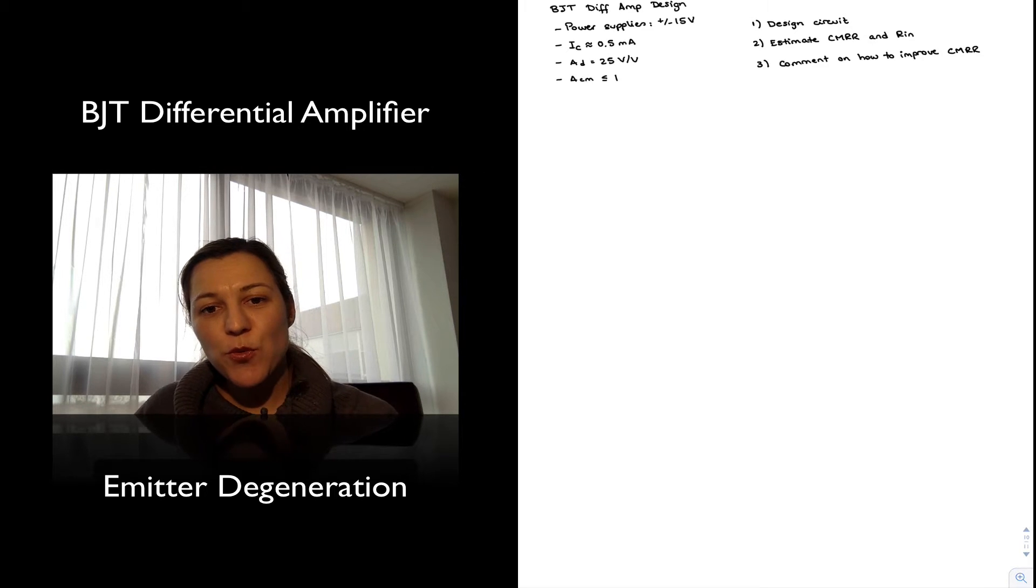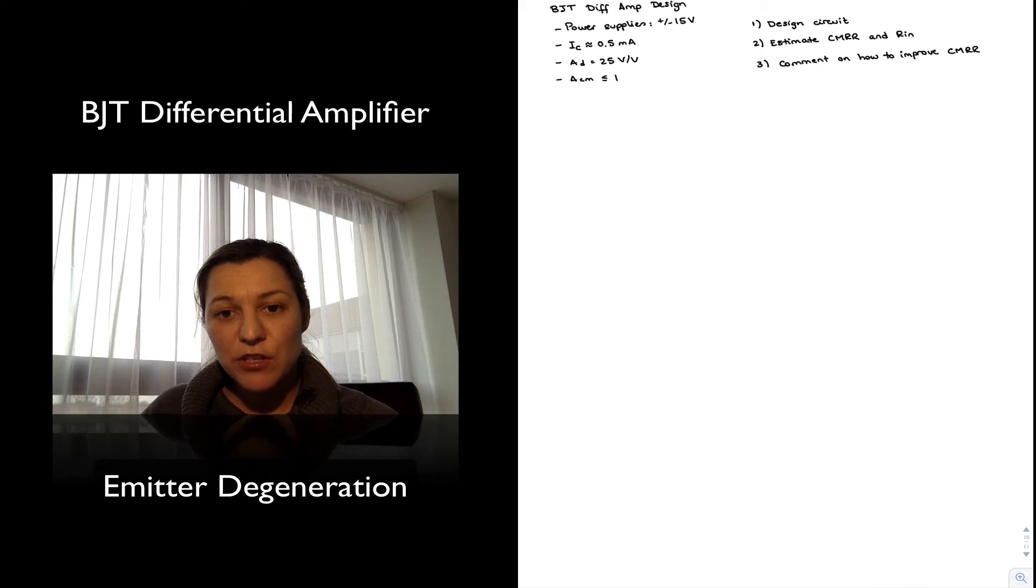Hello. In this video, we are going to go over a design example for a BJT differential amplifier. We have some design constraints. We are going to design our circuit using dual power supplies of ±15V. We are going to bias our transistors with a quiescent current of approximately half a milliamp. And we are shooting for a differential gain of about 25V per volt and a common mode gain that is less than or equal to 1.